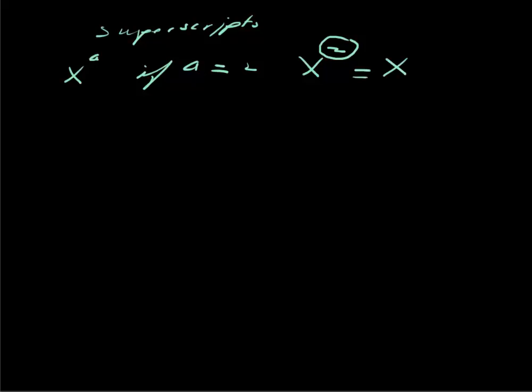Okay. Now, with superscripts, we're dealing with, again, another familiar kind of notation. We have x to the a. Now, if a is equal to 2, for example, then this is x squared. And we know that this exponent really just tells us how many times we multiply x by itself.